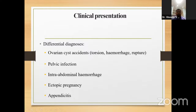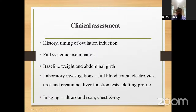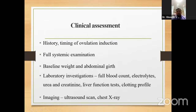Differential diagnoses include ovarian torsion, hemorrhage, rupture, pelvic infection, intraperitoneal hemorrhage, ectopic pregnancy, and appendicitis. Clinical assessment should begin at the time of history taking, covering timing of ovulation induction, full systemic examination, weight, abdominal girth, lab investigations including blood count, electrolytes, urea, LFT, clotting profile, and imaging with ultrasound scan.